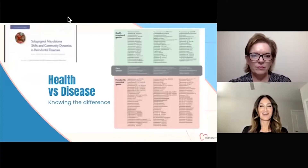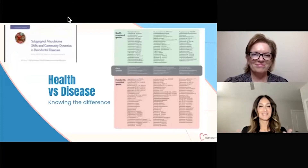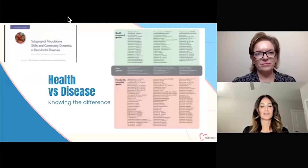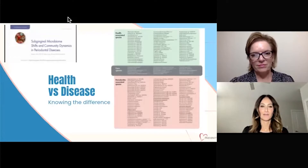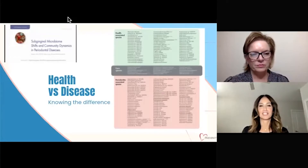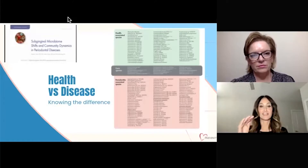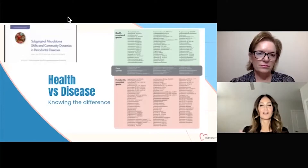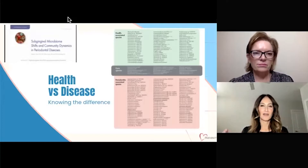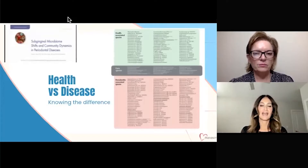I want to take a moment on this slide because a lot of us talk about all the bad bacteria. But I want you to really look at what's happening here with health versus disease — what we forget to look at is what isn't present. Because in a healthy periodontium and a healthy oral microbiome, we have very specific bacterial species. Then you see core species that overlap, and then we have periodontal species. The problem is when we have these periodontal species, we no longer have those healthy species. What we don't talk about is what is missing — we have to have the good bacteria there to actually bring back balance.